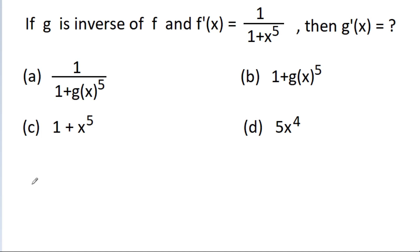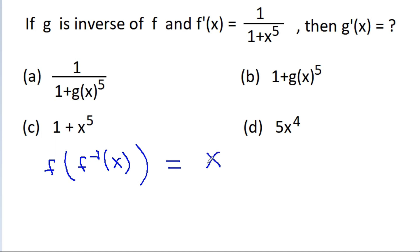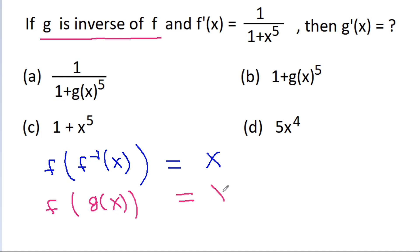We know that f of f inverse x is equal to x. We have given that g is the inverse of f, which means f of g(x) is equal to x. If we differentiate both sides, we get f prime of g(x) times g prime x is equal to 1.